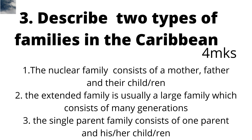The nuclear family consists of a mother, father, and their child or children. The extended family is usually a large family which consists of many generations. You can make your descriptions a little bit more comprehensive — for example, the extended family is also known as the multigenerational family. You may also give examples of persons in this type of family, such as uncles, aunts, cousins, and so on.